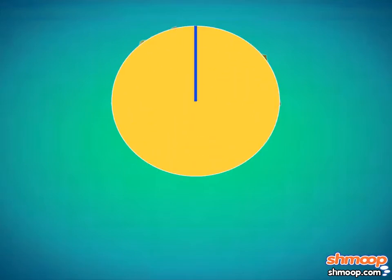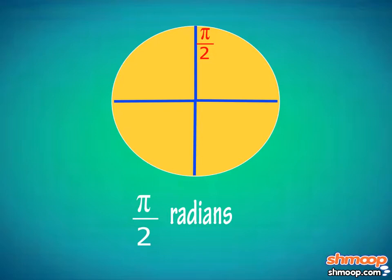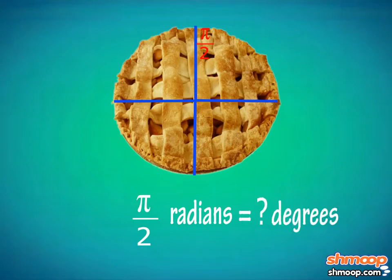Tommy cuts the pie into four even slices, each with a measure of π over 2 radians, then wonders what that would be in degrees.